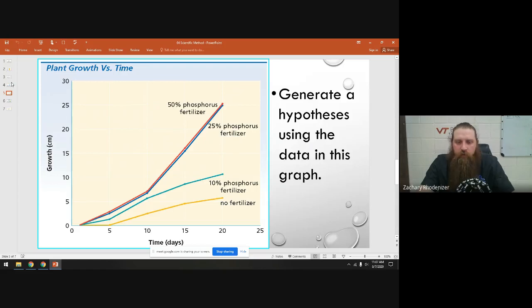So more than likely the hypothesis for this experiment was 'if you add fertilizer to plants, they're going to grow better in a given amount of time.' I would definitely say that the data supports that hypothesis. But something else that we want to get from analyzing our data is the fact that 25% phosphorus fertilizer does the exact same thing that 50% phosphorus fertilizer does.